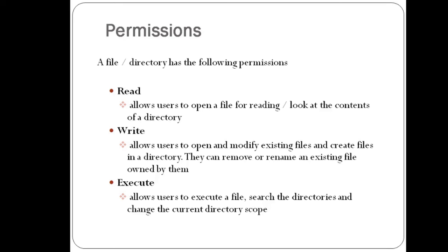When you give read permission to a file, the user can open the file for reading. Read permission on a directory means you are able to look at the content of the directory. Write permission on a file allows the user to open and modify existing files. Write permission on a directory allows you to create files, remove or rename existing files. Execute permission allows the user to execute a file. If execute permission is given for a directory, you will be able to search the directory and change the directory scope.